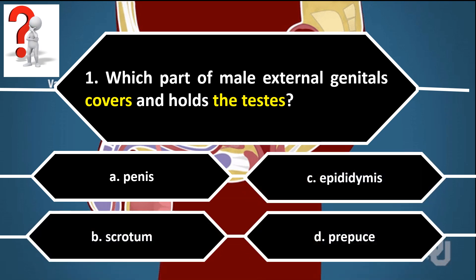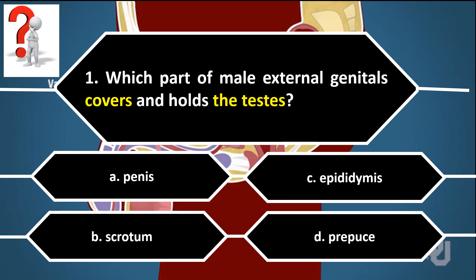Number 1. Which part of male external genitals covers and holds the testes? A. Penis. B. Scrotum. C. Epididymus. D. Prepuce.